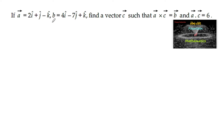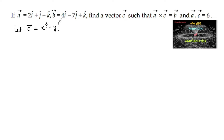If vector a is equal to 2i plus j minus k and vector b is equal to 4i minus 7j plus k, find a vector c such that a cross c is equal to b and a dot c is equal to 6. Let vector c be equal to xi plus yj plus zk such that a cross c is equal to b.